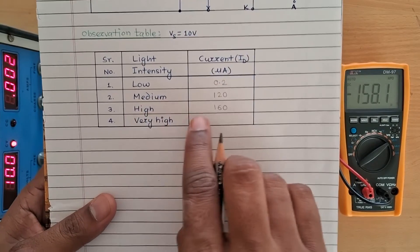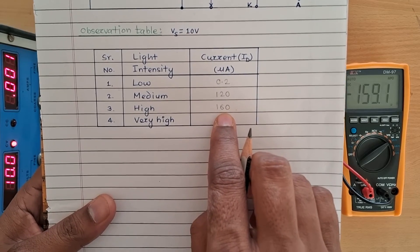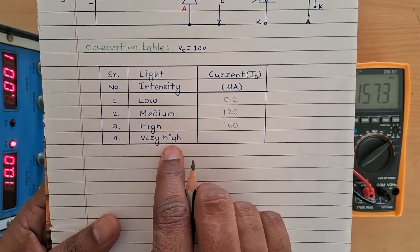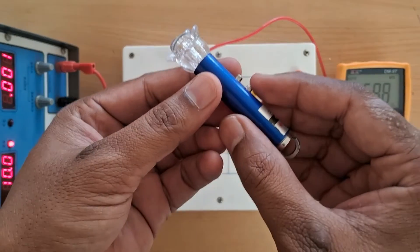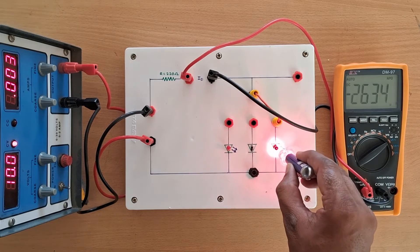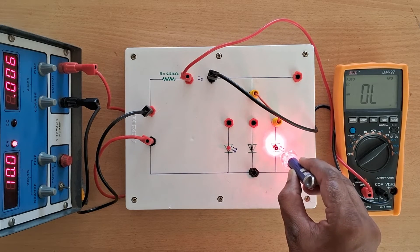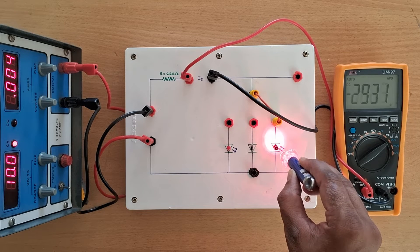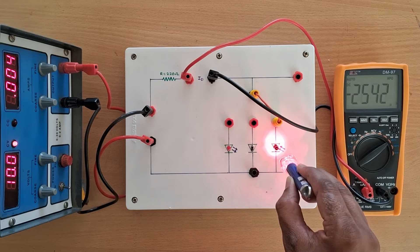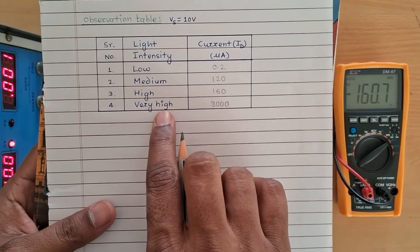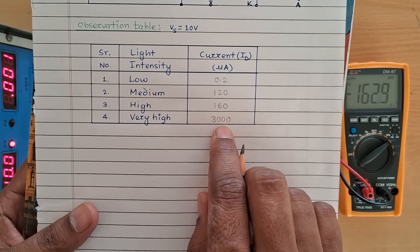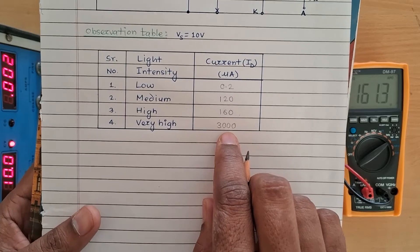At high intensity we are getting 160 micro-ampere current. Now our last reading is at very high light intensity, for which we will use a light torch. As soon as I light up this photodiode with the torch, the value of current is very high — nearly 3000 micro-ampere, which means 3 milli-ampere.